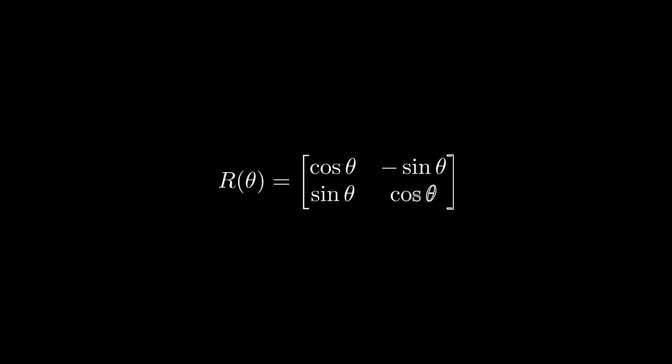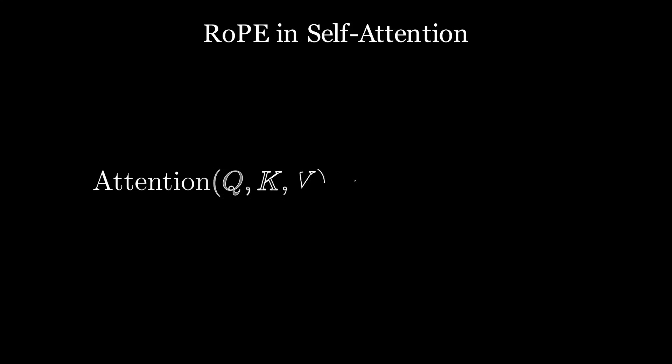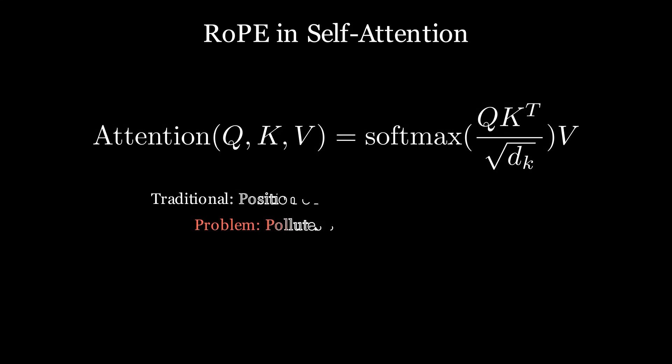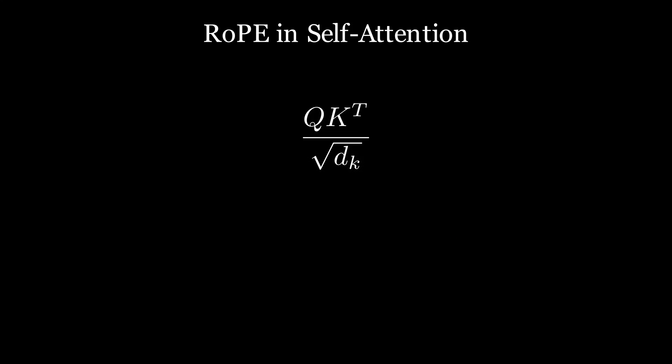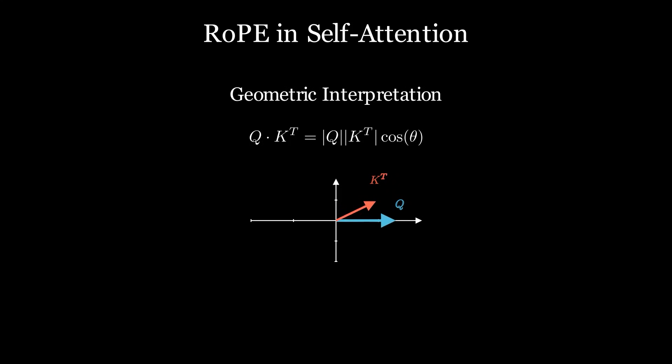This is the equation for ROPE. R_theta is a rotation matrix. To understand how ROPE works, we need to revisit the self-attention equation. If you need a refresher on the topic, consider watching my video on it. Now if we have a look at the equation, particularly at the Q dot K transpose step, it is a dot product. A dot product can also be written as Q multiplied by K transpose multiplied by cos(theta). Now we can rotate this theta as we please to introduce positional information.